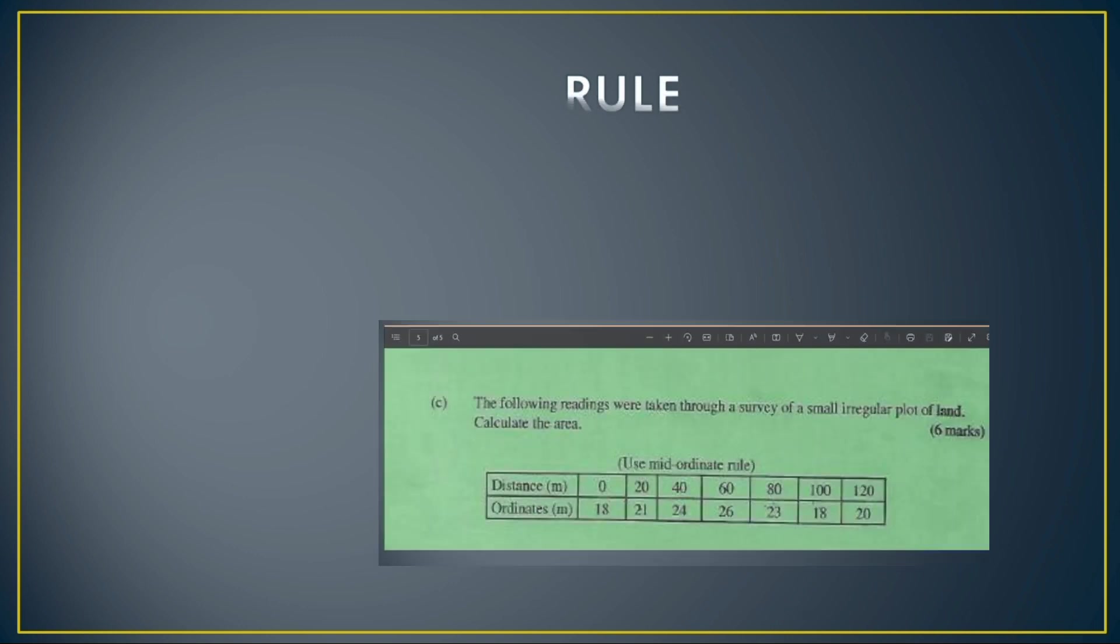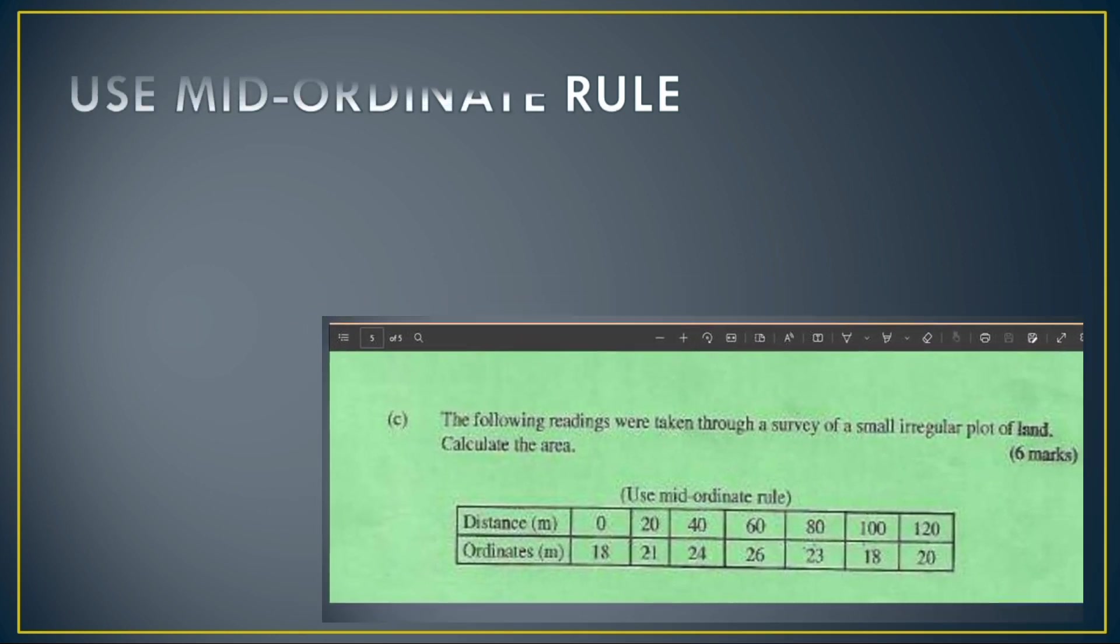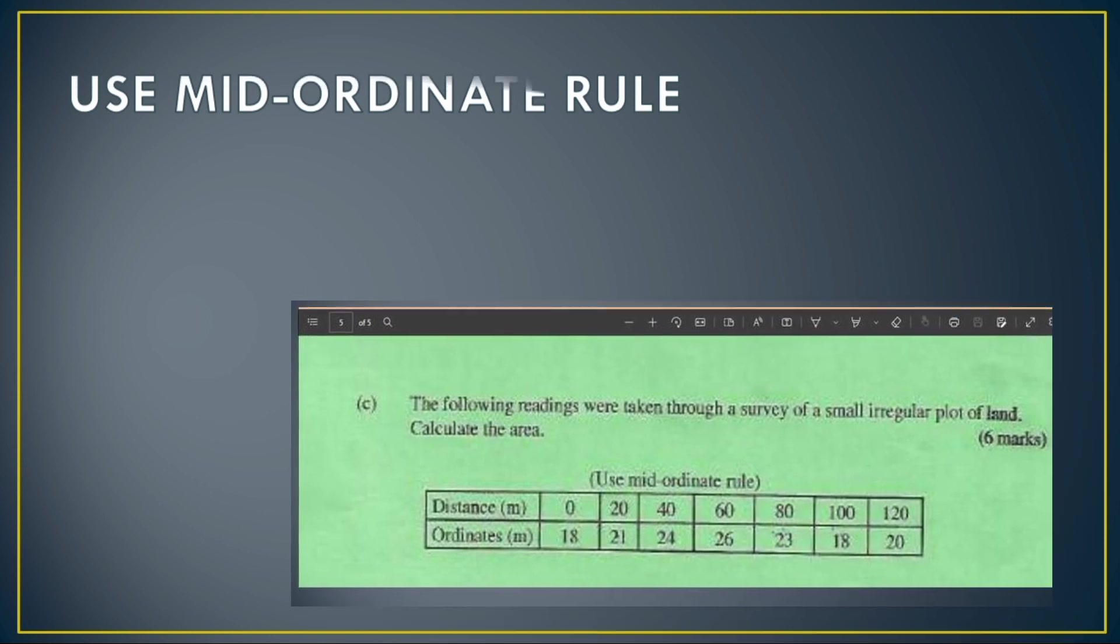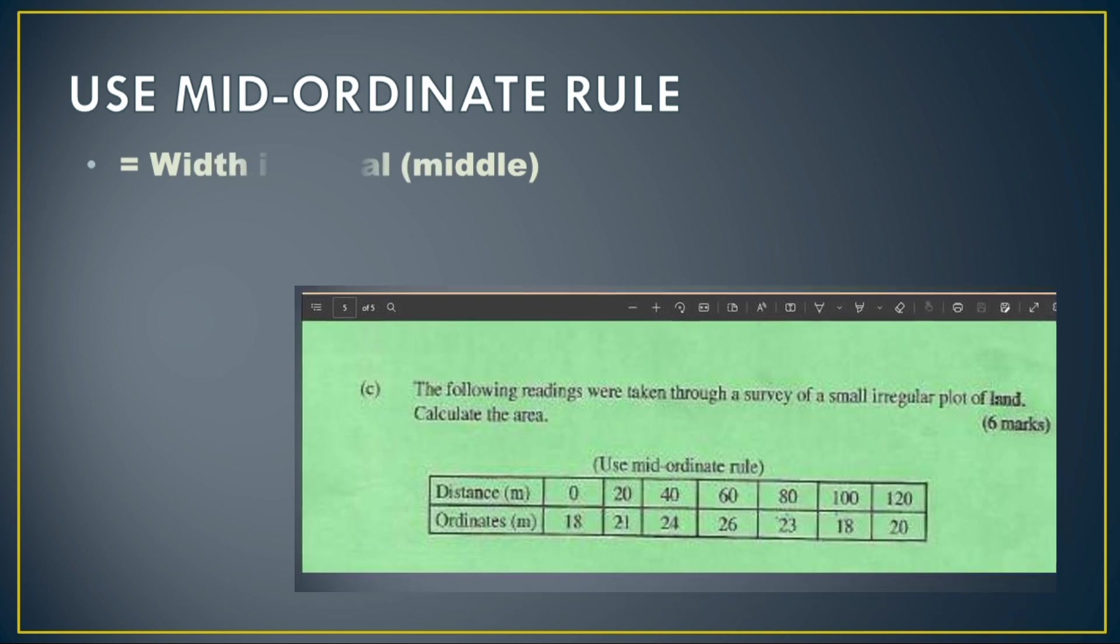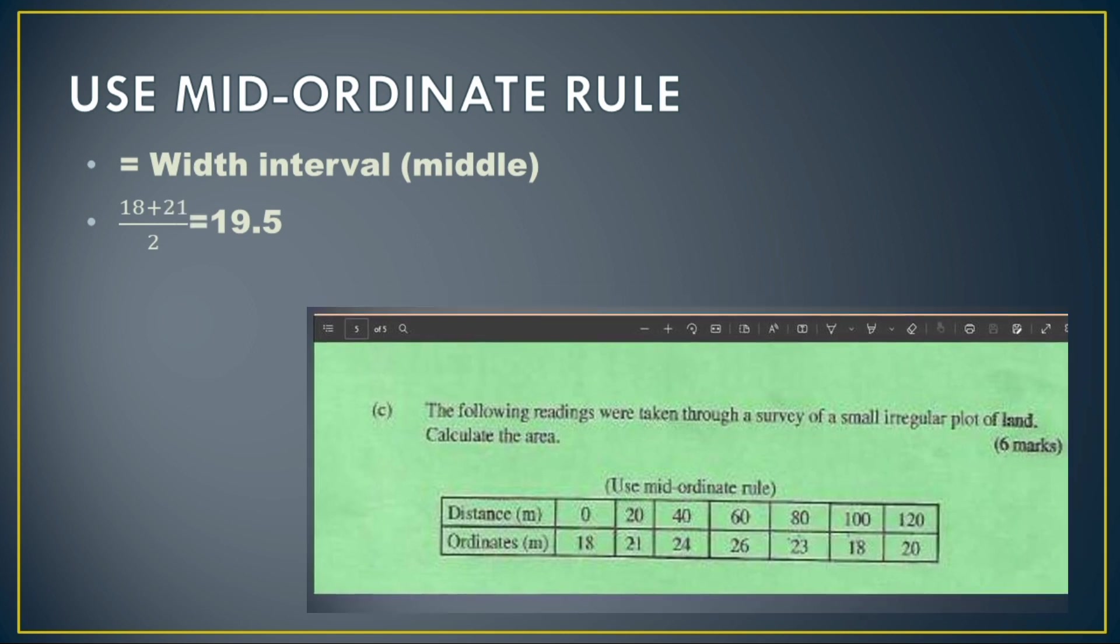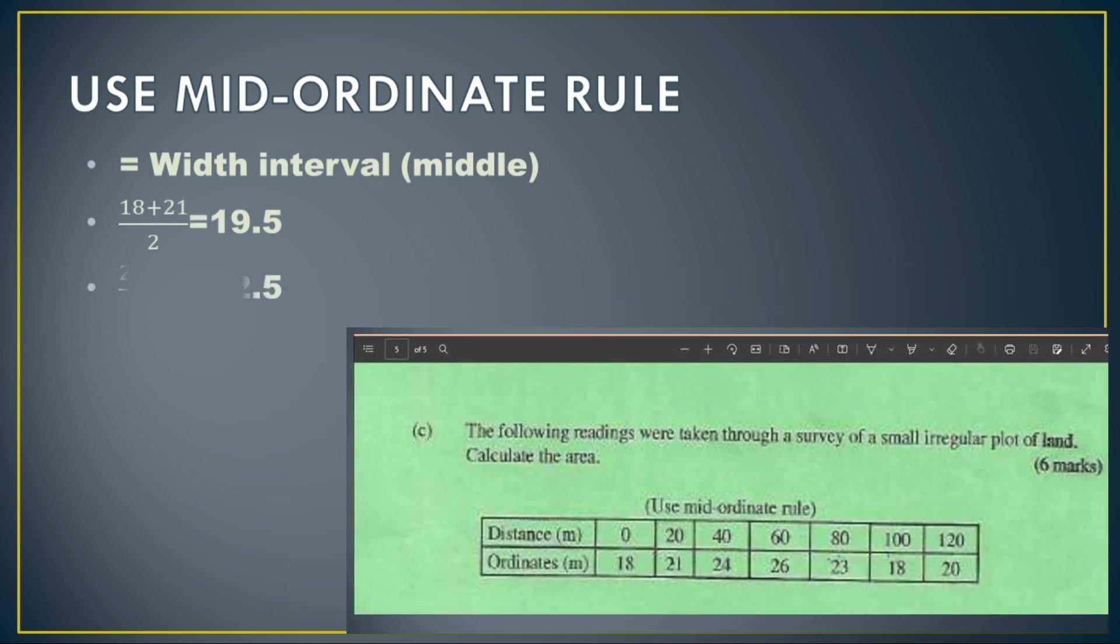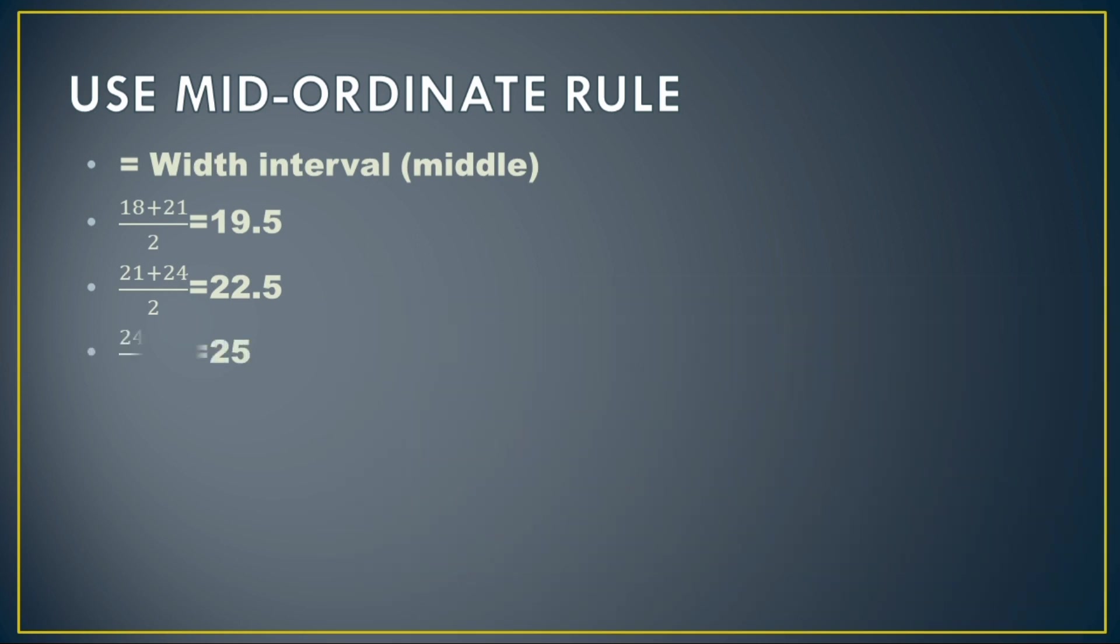So our first ordinate is 18, our second ordinate is 21. We add those two and find the mean by dividing the addition by two. Then in our second interval, our first ordinate will be 21 plus 24 divided by 2, getting our answer. The same will be applied to all the remaining ordinates.